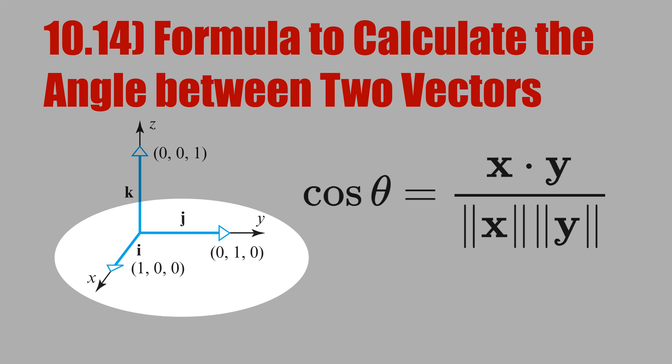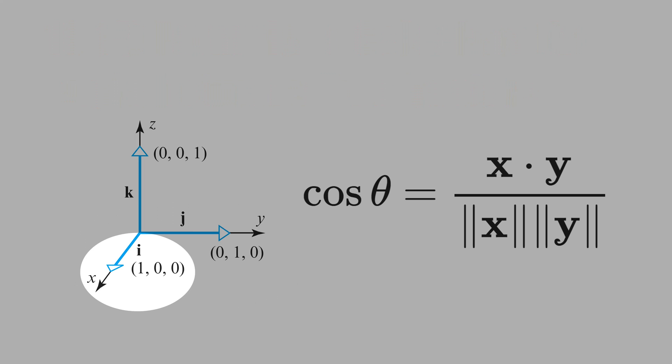Let's calculate the angle between the vectors i and j. The coordinates of i is 1, 0, 0 and j is 0, 1, 0.